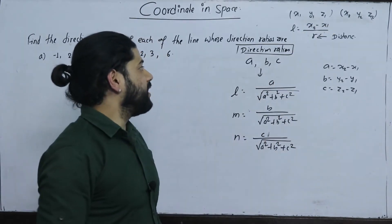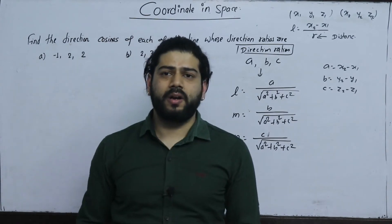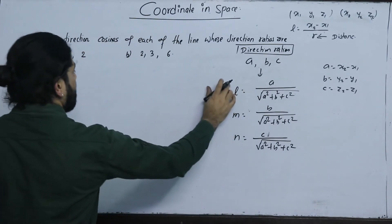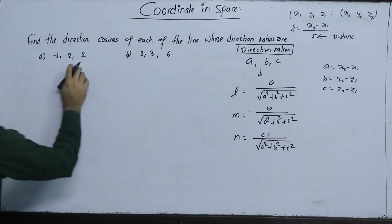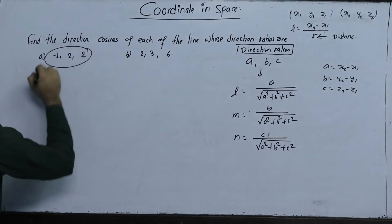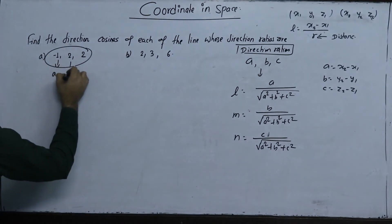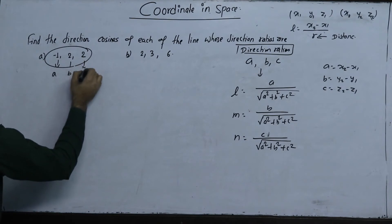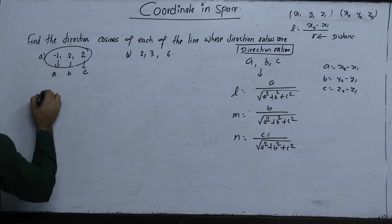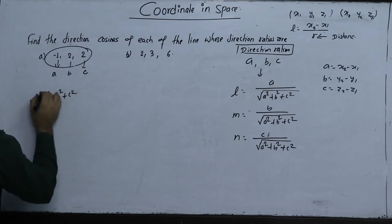Normally, the direction ratio is related to the direction cosine in the same way. The question is: find the direction cosines of each line with the direction ratio A, B, C. Now, we compute the square root of a squared plus b squared plus c squared.